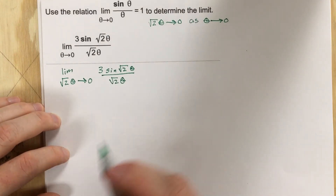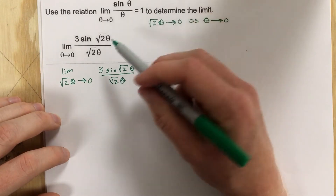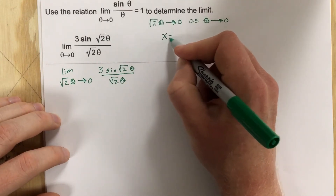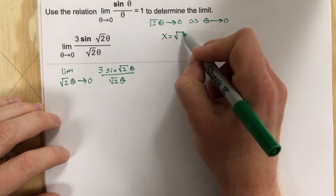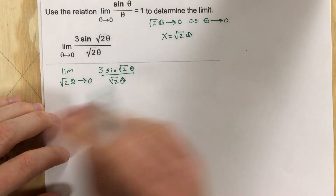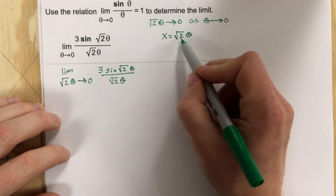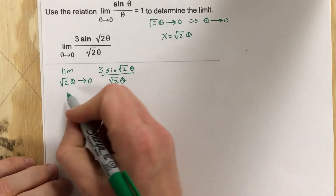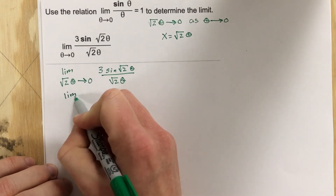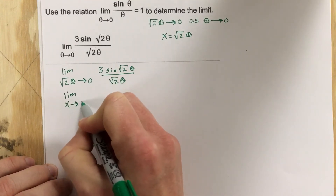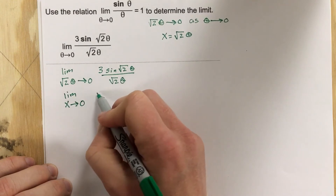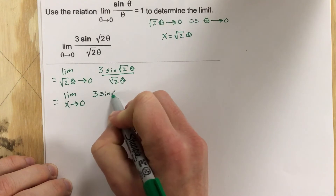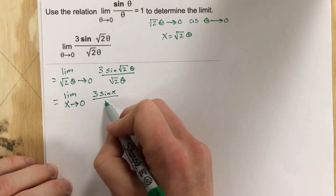Now we're going to use an algebraic manipulation that's used quite often. We're going to replace root 2 theta with x, so we're saying x equals root 2 theta. We're essentially switching the variable. If we do that, that means we have the limit as x approaches 0 of 3 sine x over x.